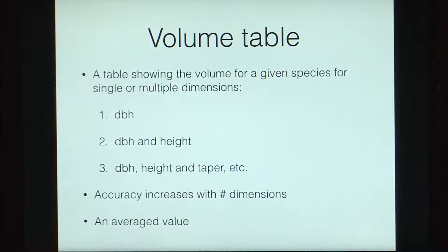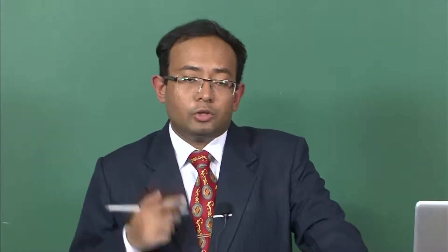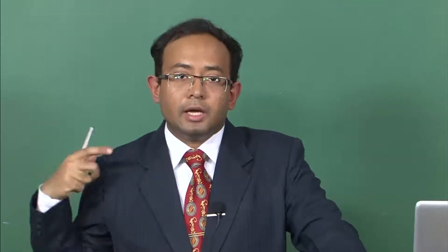In the case of a volume table, the volumes are average values. They might not correspond to each and every tree, but they are averaged-out values because we want a quick estimation. If you are in a forest and want a very accurate and precise measure, you would chop down your trees, cut them into sections, measure each section, and sum up those volumes to get the exact volume of every tree. But if you wanted a quick computation, you could take an averaged-out value.